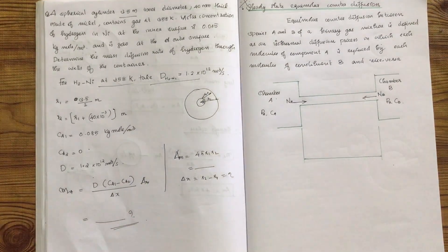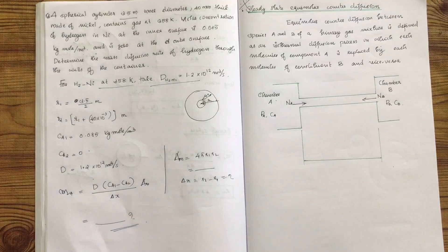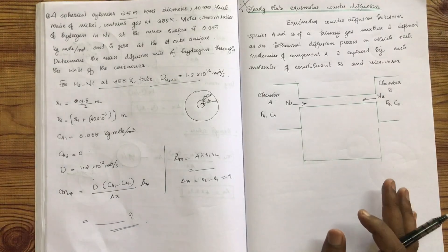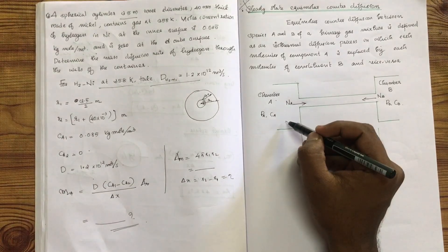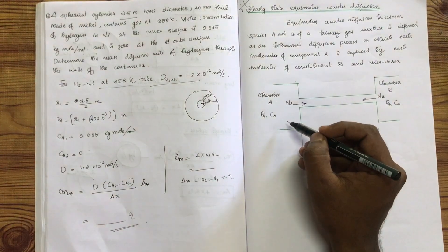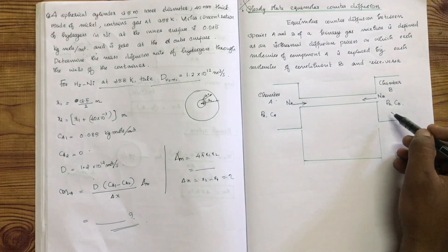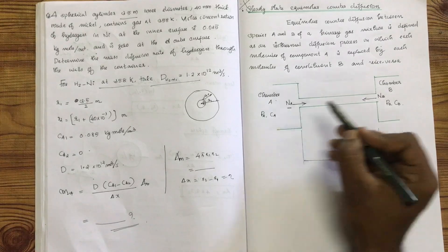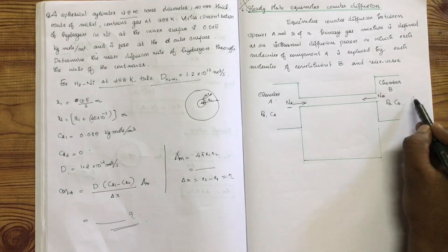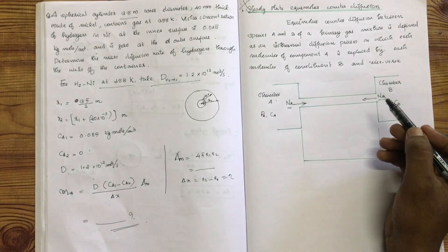Let's look at the case of the equation. We have a concentration of A-type and B-type. What is mass diffusion? We can define what it is. This is mass diffusion.